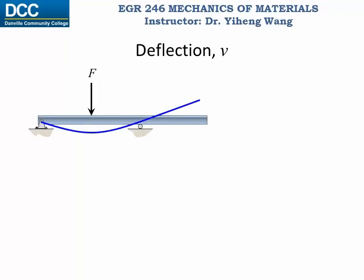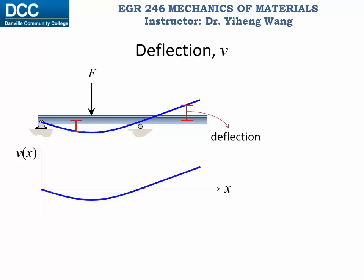First we need to define deflection v, which is the vertical displacement of the centroid of each beam cross-section with respect to its original location. Since deflection v varies with location, we can plot the deflection as a function of location x, and the graph of the deflection function is the elastic curve.